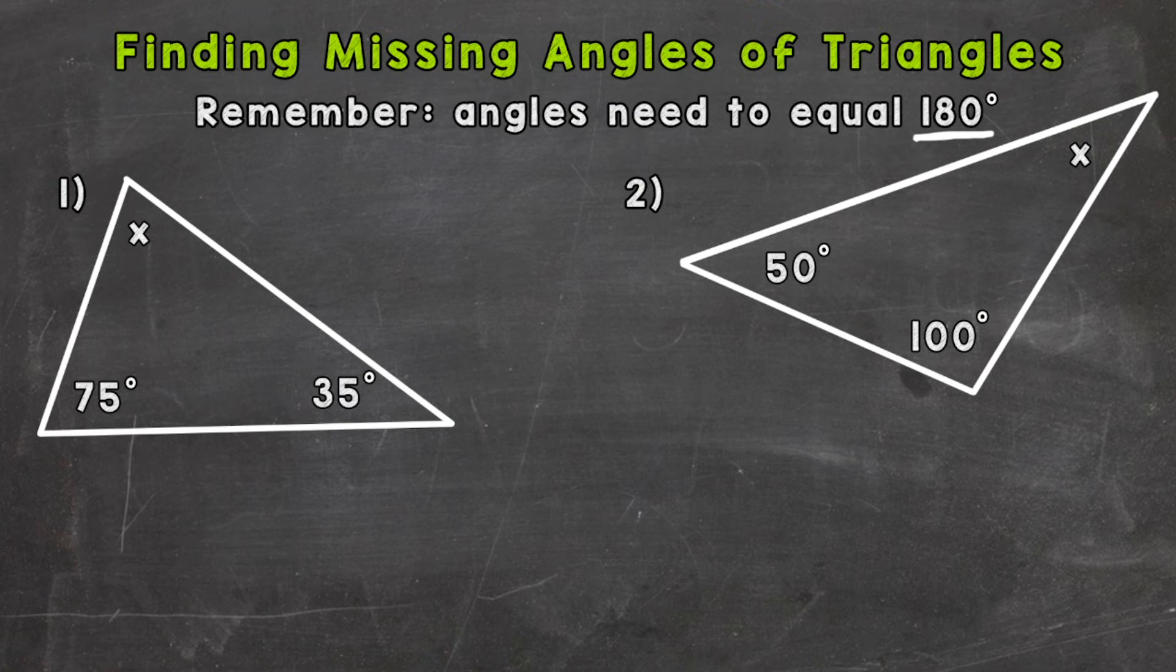When you add the three angles up for a triangle it's going to equal 180 degrees.